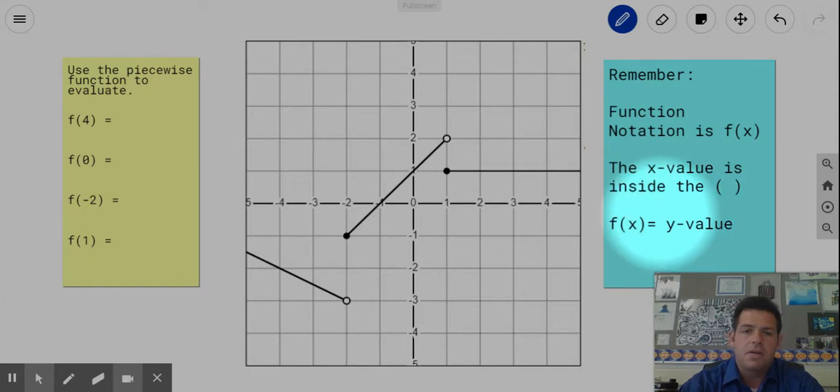So we have our graph here and you can see it's a piecewise function. There's three pieces that are involved there. We have some things that are included and excluded. We'll get to those in a second.